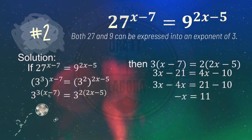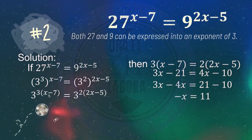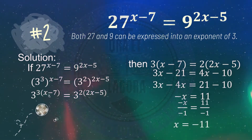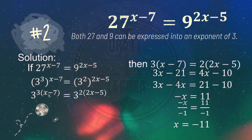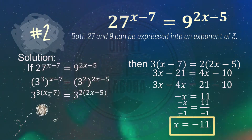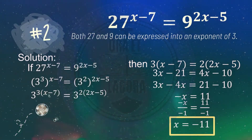And 21 minus 10 is 11. To cancel out the negative 1 on x, we divide both sides by negative 1. So x equals negative 11, since 11 divided by negative 1 is negative 11. The value of x is negative 11.